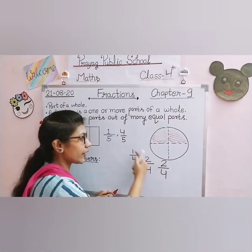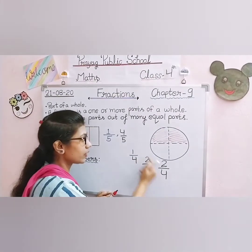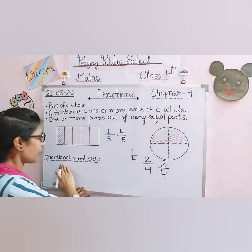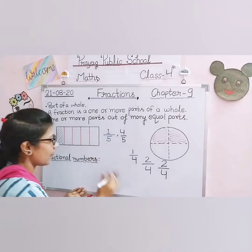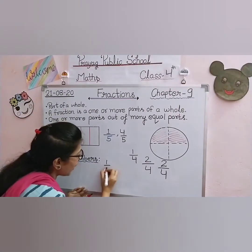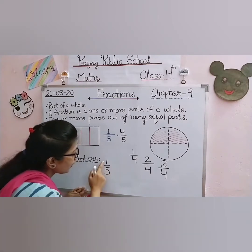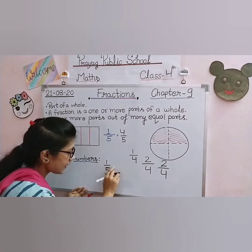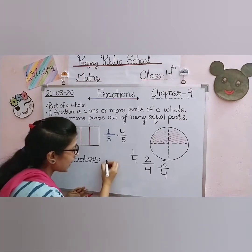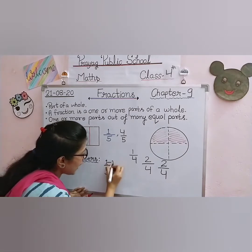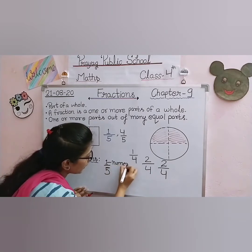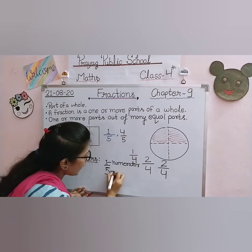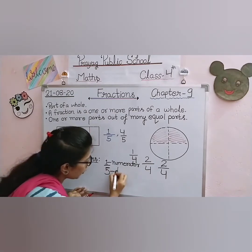So the numbers we get — one upon four, two upon four, one upon five, four upon five — these are called fractional numbers. In one upon five, the number above the slash line is the numerator and the number below the slash is the denominator. You have studied this in the previous class.